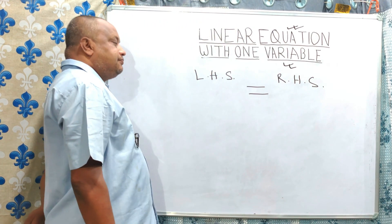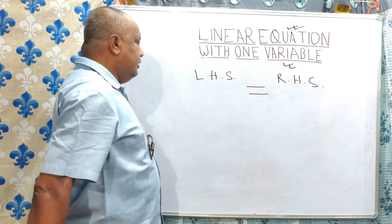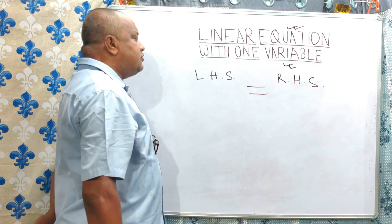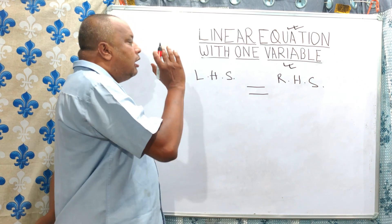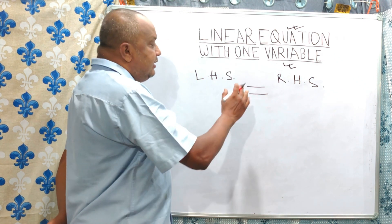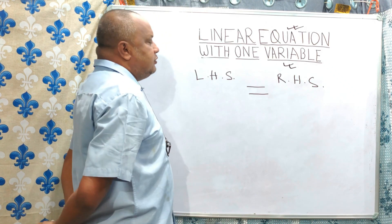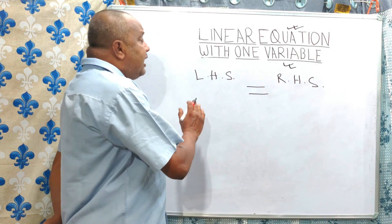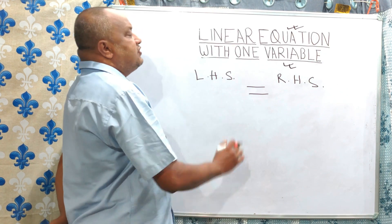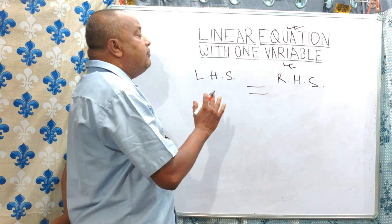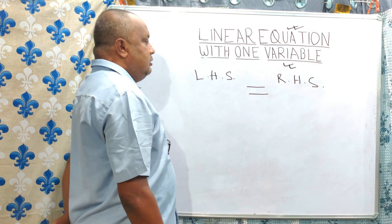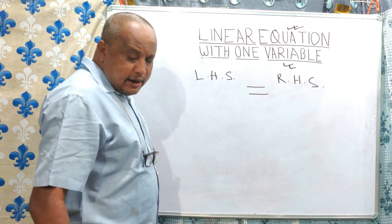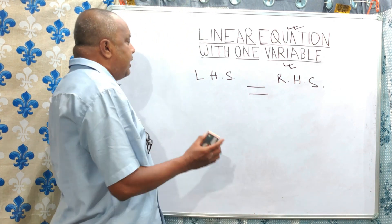Now, on both sides — left-hand side or right-hand side — each side consists of variables and constants. Variables and constant numbers. You should know what is a variable and what is a constant number.